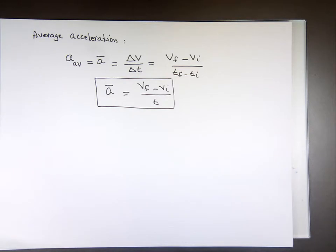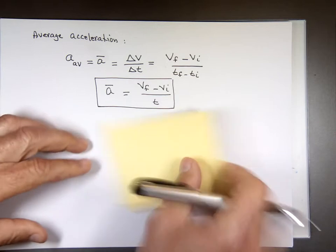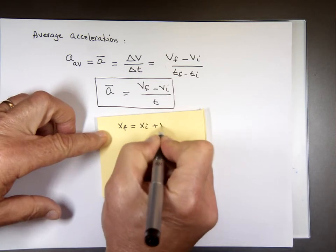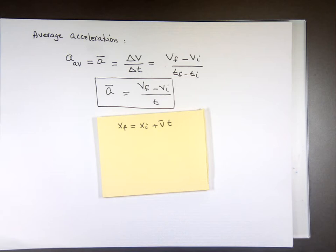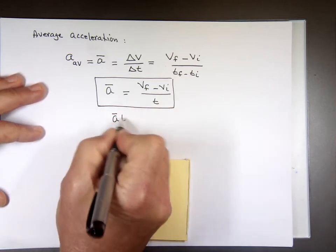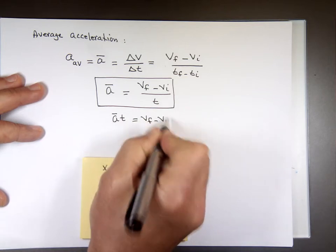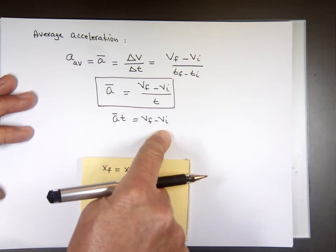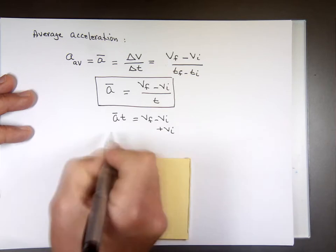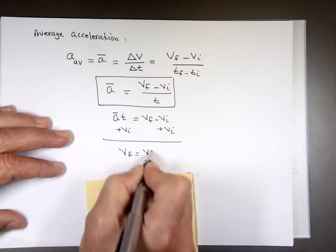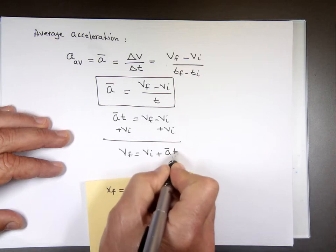Let me take a clean sheet of paper and write them on it. The first one we wrote is: X-final equals X-initial plus V-average times time. I'm going to write the second one from this. If you multiply both sides by T, you get V-final minus V-initial. Solving for V-final by adding V-initial to both sides, you end up with V-final equals V-initial plus acceleration times time. That's my second equation.